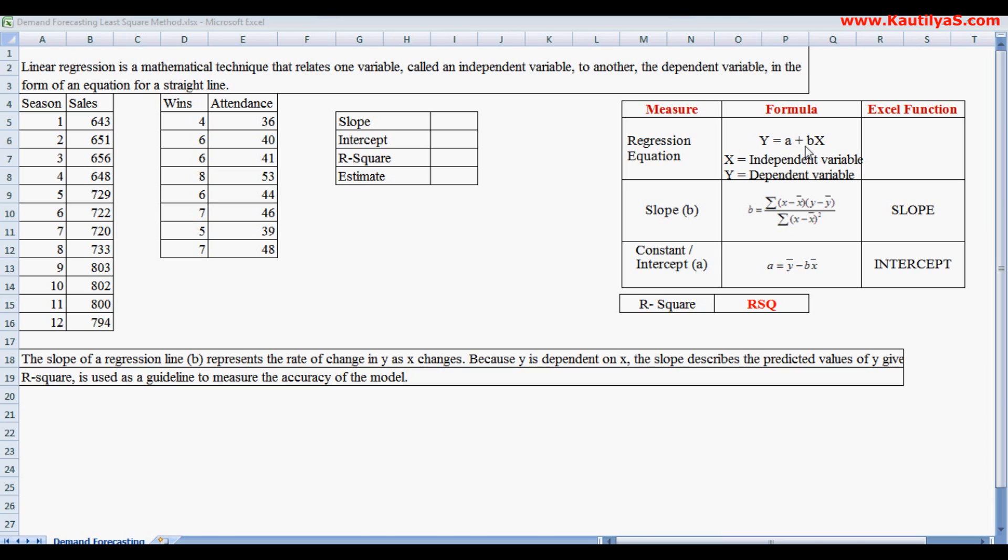B is the slope and X is the independent variable. To calculate the regression equation or to estimate the demand of sales, we use this equation. Instead of doing manual mathematical calculations, we're using Excel.